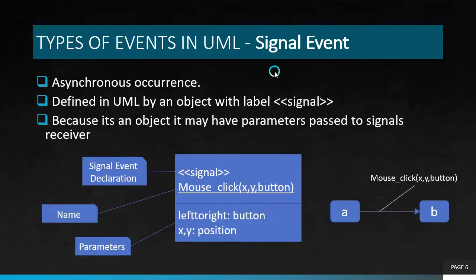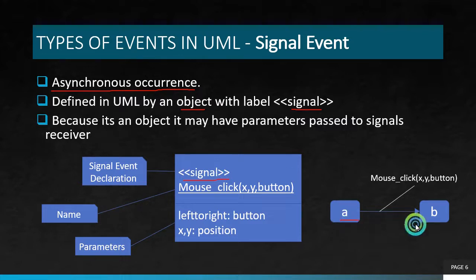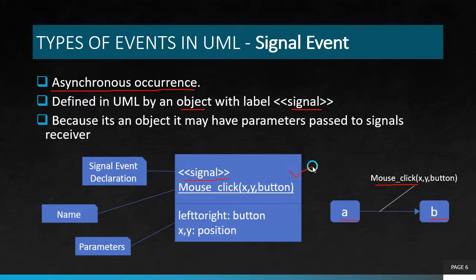First, we have the signal event. A signal event is an asynchronous event or an asynchronous occurrence. We define it as an object — for example, mouse click of x, y, button. Just above that, we label it with two opening tags and two closing tags with 'signal' between them. This label is used to define signal events. So here we have state A and state B, going from state A to state B by mouse click of x, y, button. This is a signal event described by this object, and it also has parameters that are passed to the signal receiver.